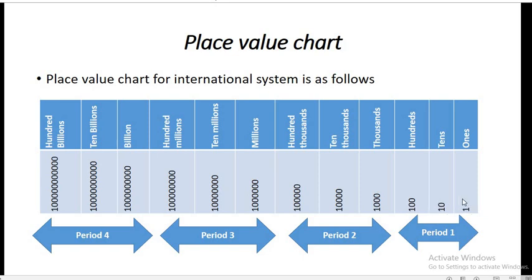So in period one we have ones, tens, hundreds. Similarly, the next set of three is thousands, ten thousands, hundred thousands. Again, millions is also a set of three, and billions is also a set of three.